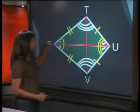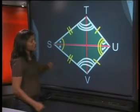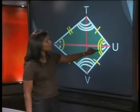Look at all the equal parts that we have shown on our kite. We know that these two angles are equal here at S. And at U, we know that these two angles are equal.